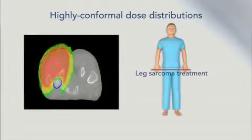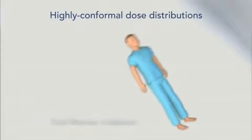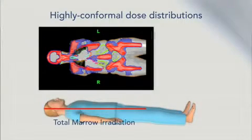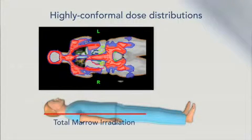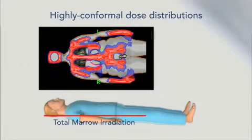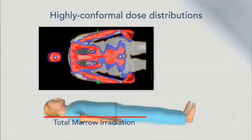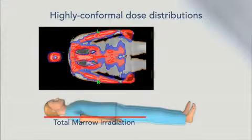In this leg sarcoma case, keeping the high dose region away from the right femur was a key objective. A technique known as total marrow irradiation, or TMI, can be used as preparation for a bone marrow transplant. With this exquisite dose sculpting, the brain, eyes, thyroid gland, lungs, heart, liver, kidneys, and small bowel are all protected. With TMI, the goal of white blood cell depletion is achieved, but with few gastrointestinal complications.